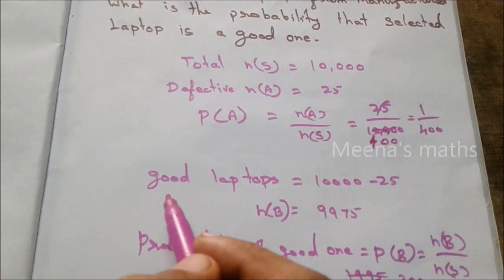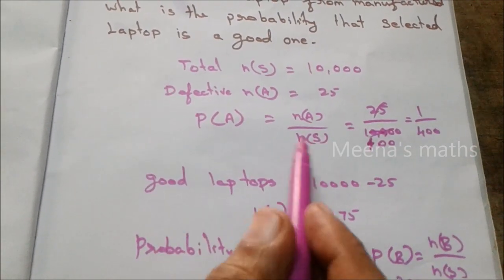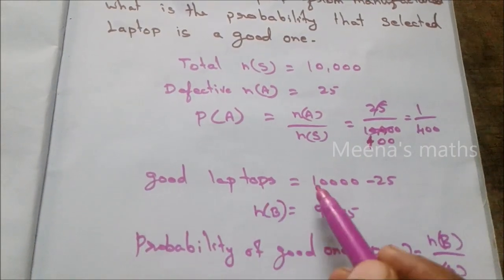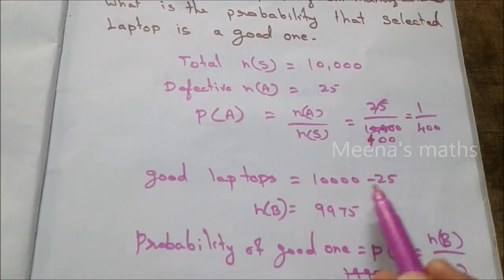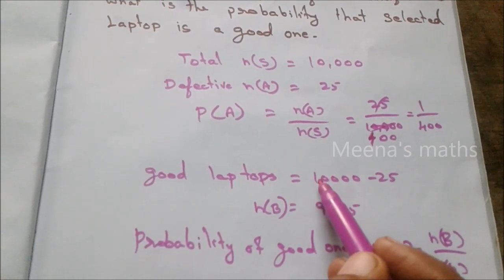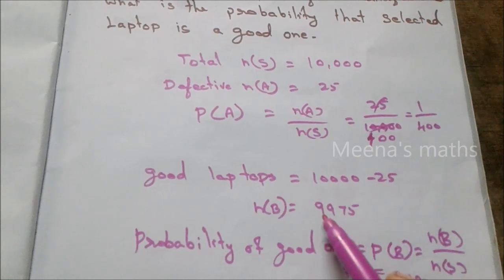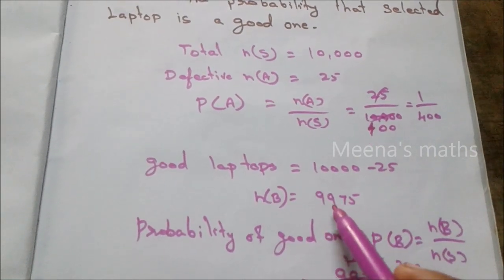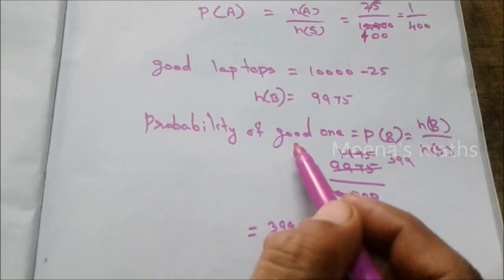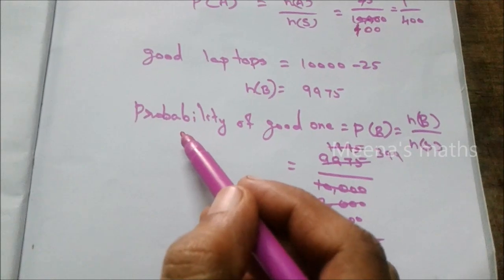Now for good laptops: total laptops are 10,000. Good laptops equal 10,000 minus 25, which equals 9,975. So the probability of a good laptop means the chance of selecting a good one.